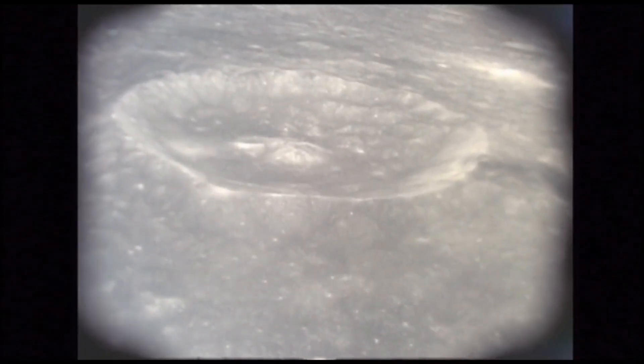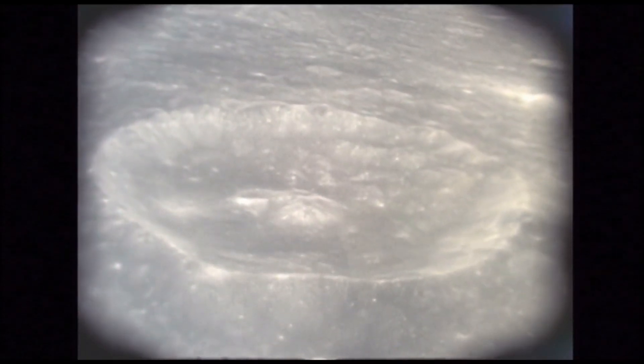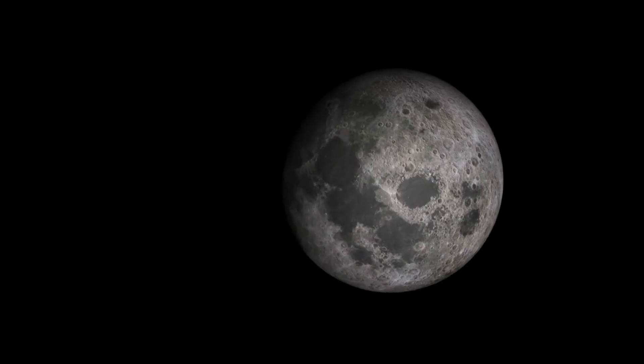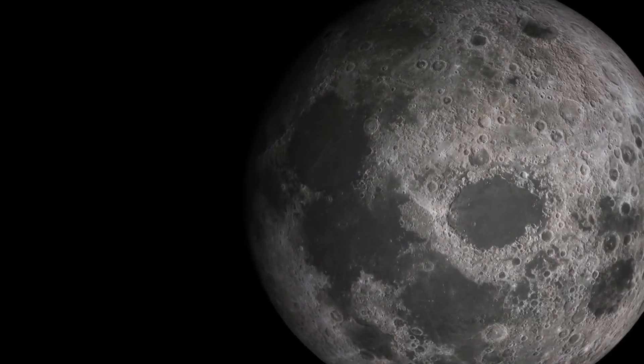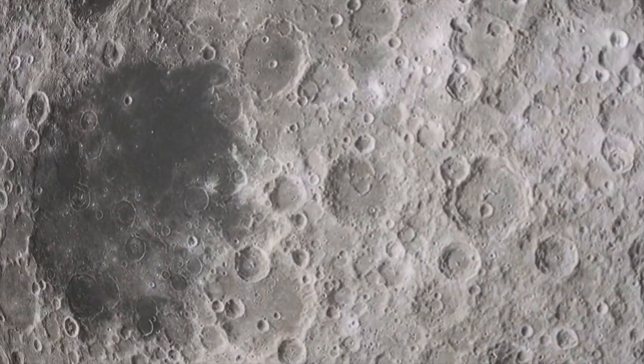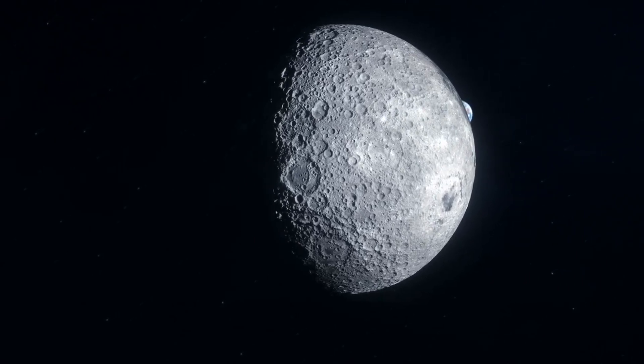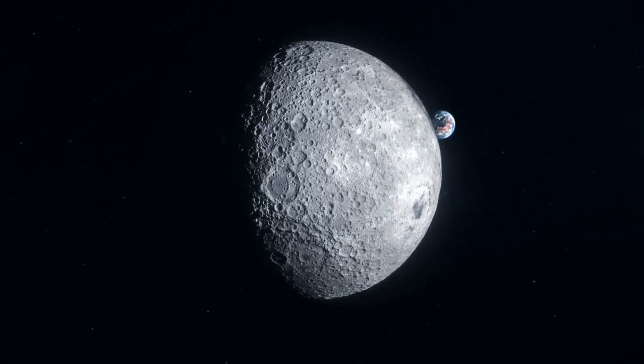The anomaly lies within the South Pole-Aitken Basin, the largest preserved impact crater in the solar system. Spanning more than 2,000 kilometers, this colossal scar on the moon was created approximately 4.3 billion years ago by a massive asteroid impact. Despite its immense significance, much about the basin and the consequences of its creation remains a mystery.